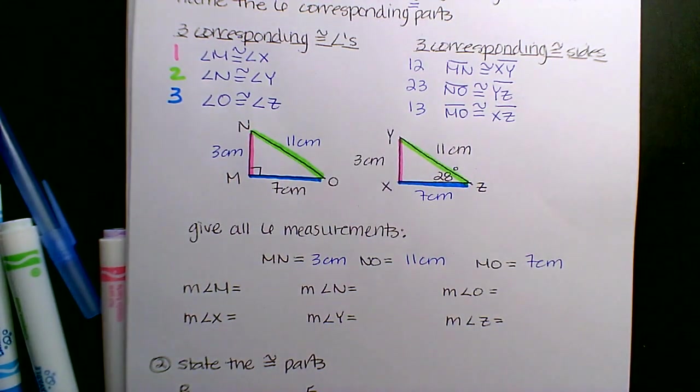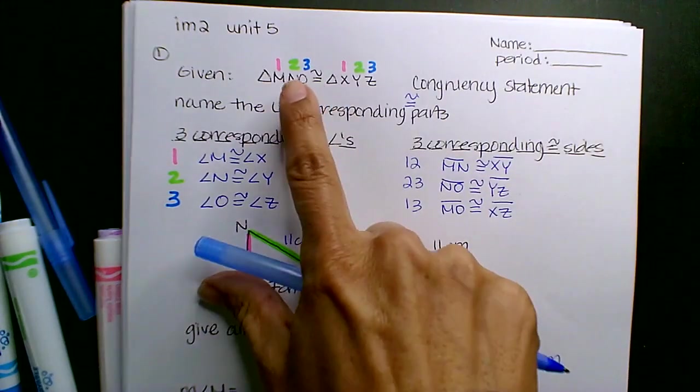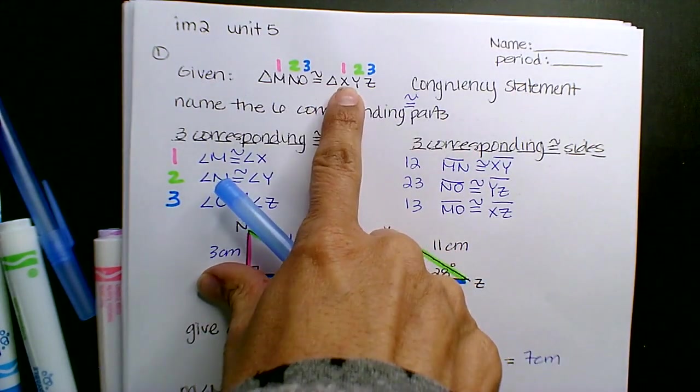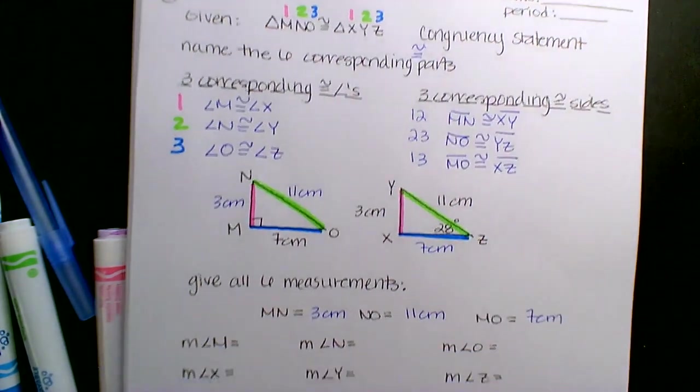So congruent triangles are equal. Their side lengths are equal. Their angle degrees are the same. So if they give you one, there's a partner there, a pair on the other triangle that it connects to. You just have to be able to read the order of the congruency statement, and that gives you everything. It tells you how it correlates.